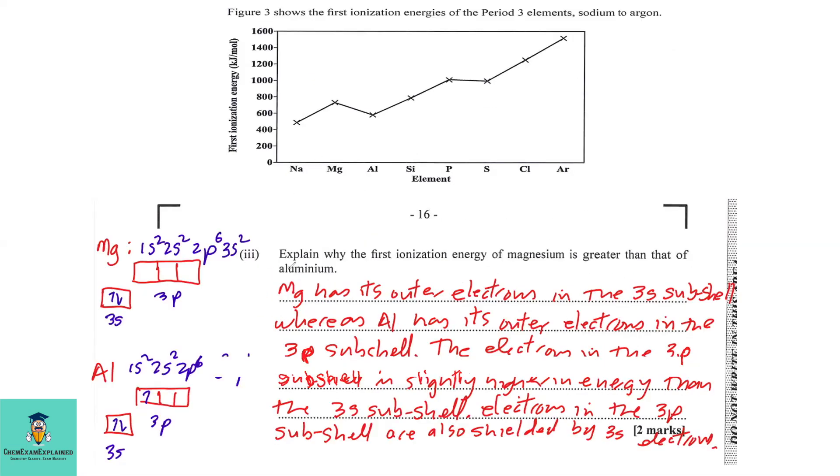Part 3: Explain why the first ionization energy of magnesium is greater than that of aluminium. In answering the question, we have to look at the configuration and where the last electron is placed. You'll see here that the electrons are placed in the 3s subshell for magnesium, while the last electron is placed in the 3p subshell for aluminium. So in answering the question, magnesium has its outer electrons in the 3s subshell. The electrons in the 3p subshell is slightly higher in energy than the 3s subshell. Electrons in the 3p subshell are also shielded by the 3s electrons.